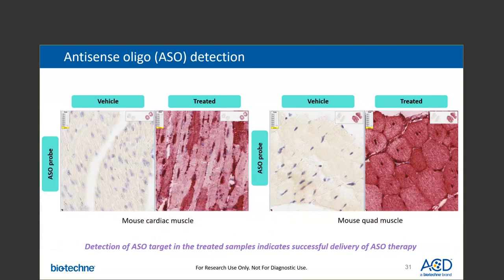Here's an example of our customers using our new assay to validate their ASO-mediated therapy. Vehicle tissues are used as control samples, and treated tissues are where the ASO compound is delivered. As you can see, the ASO target is detected at high levels only in the ASO-treated mouse cardiac and quad muscle samples. The control vehicle samples show no detection of the ASO target. This data helped the customer conclude that this was a successful delivery of their ASO therapy.